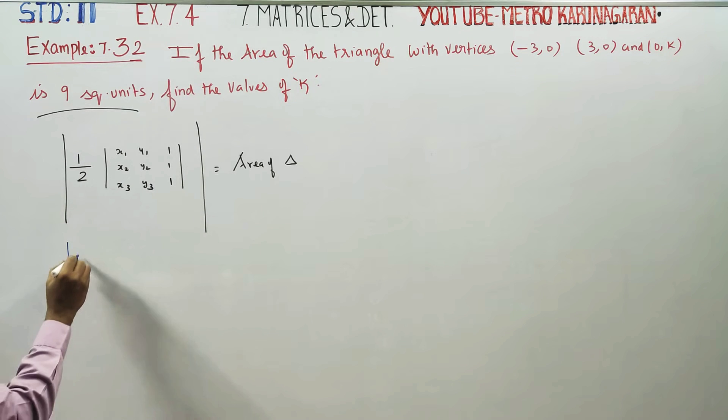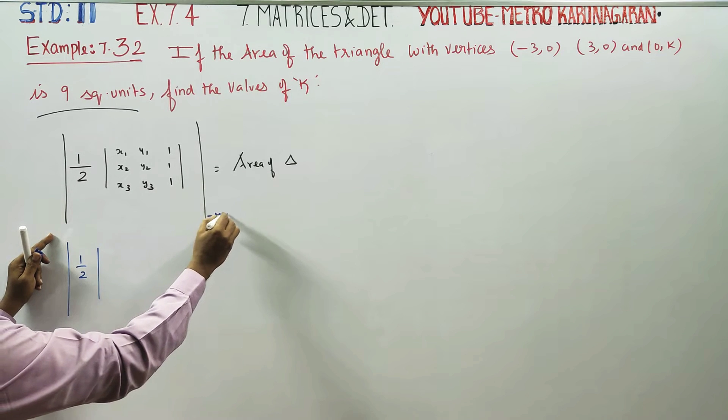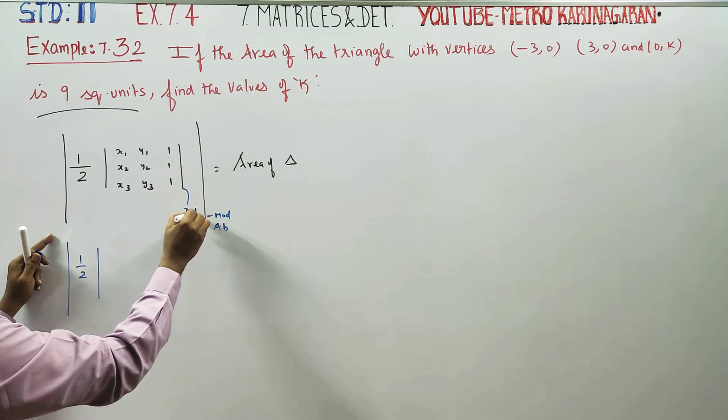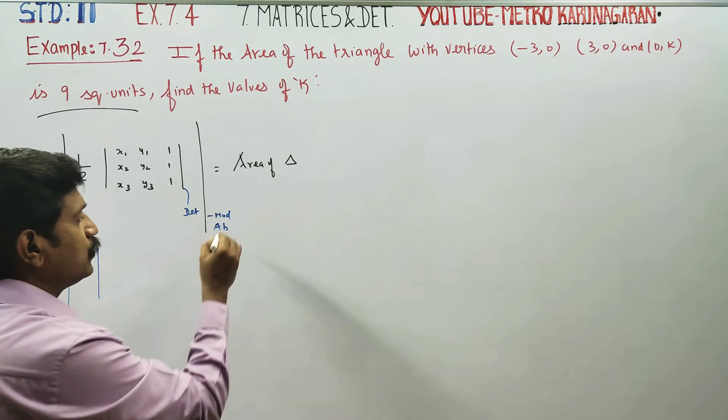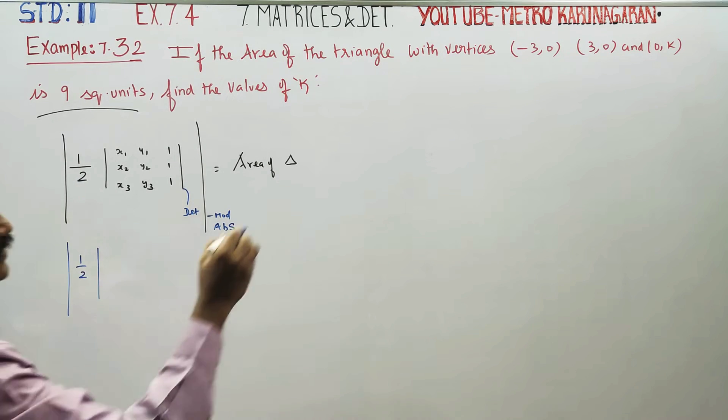1 by 2, this is the absolute value. This is modulus or absolute value. This is the determinant. We can confuse this. This is absolute value or modulus. 1 by 2, determinant.